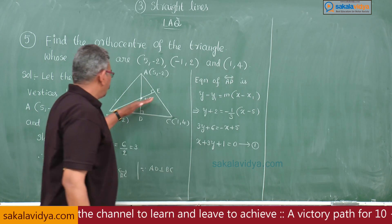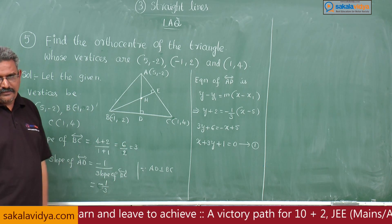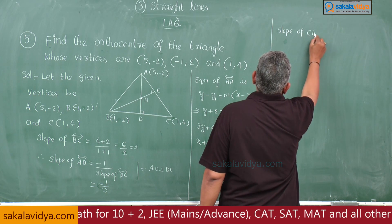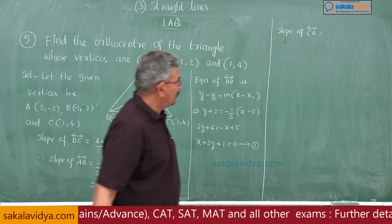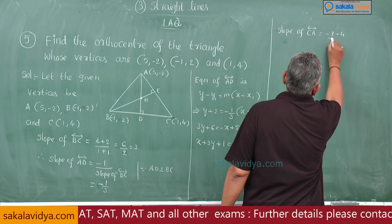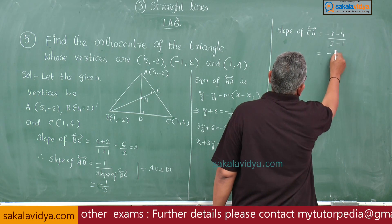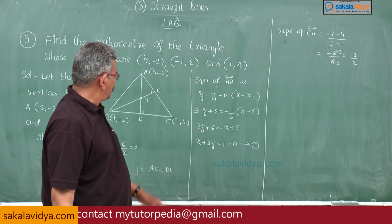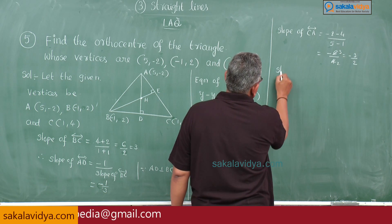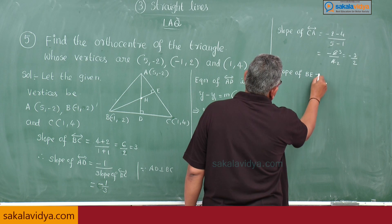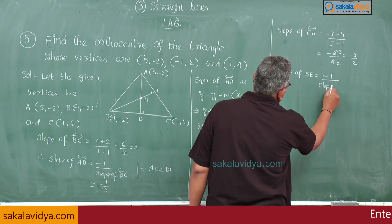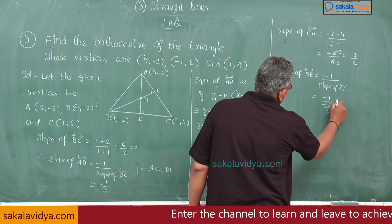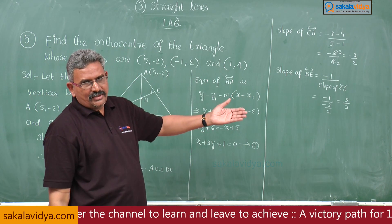Now find the equation of altitude BE. First, find slope of CA: slope of CA = (-2 - 4)/(5 - 1) = -6/4 = -3/2. Since BE is perpendicular to CA, slope of BE = -1/(-3/2) = 2/3.